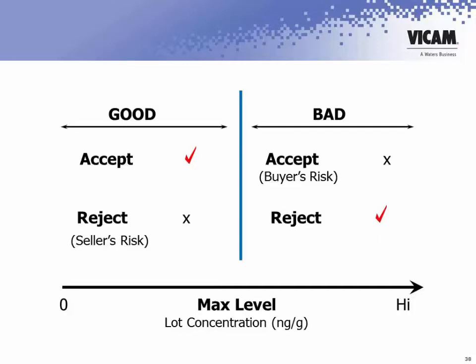If the lot is truly above the rejection level, then normally it would be rejected. But there is a buyer's risk, and that is if, as we showed in some of the previous slides, a sample was taken that doesn't really represent the mean contamination level of the lot — then the buyer could accept that result, and would be obtaining a lot which actually did not pass the rejection level.